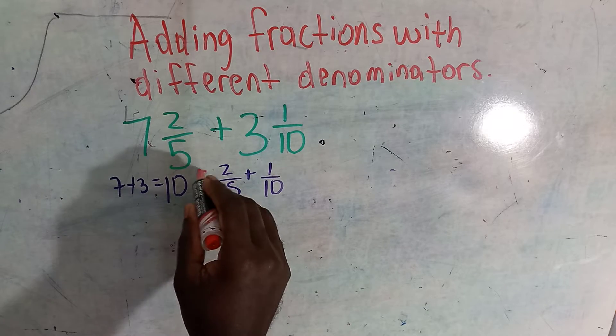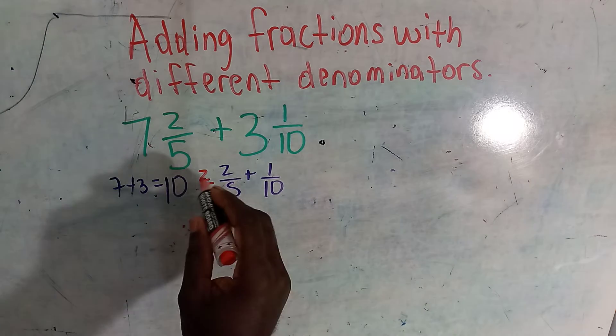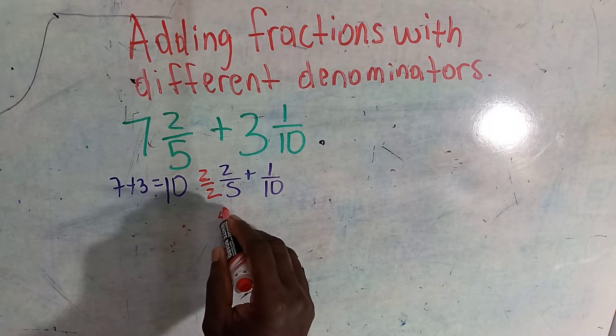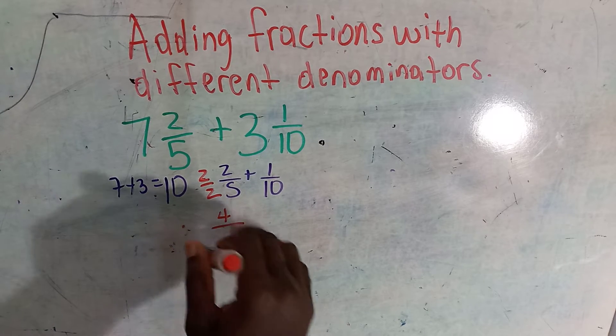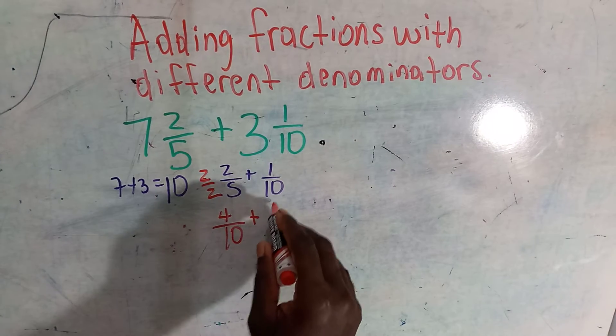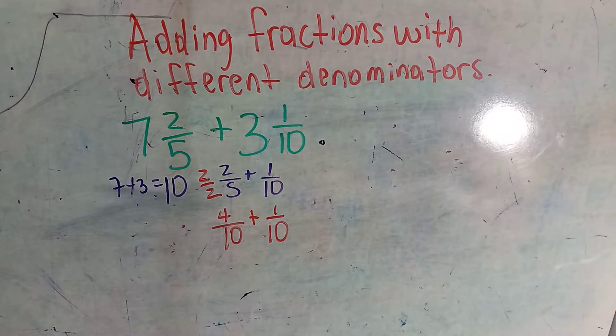So we multiply it by two. We multiply the bottom one by two. Two times two is four, two times five is ten. Plus, put back this one, which is one over ten.